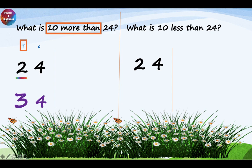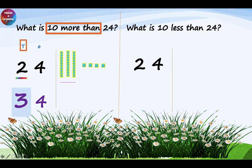Our answer is 34. Let's see the same example using 1's and 10's blocks. For 2 tens, I'm going to place 1 and 2 — that is 20. And now for 4 ones, I'm going to place 4 blocks: 1, 2, 3, 4. The sum says 10 more than, so I'm going to add 1 more ten block. Now there are 3 ten blocks and 4 ones blocks.